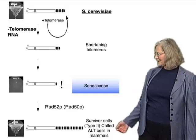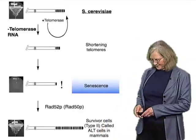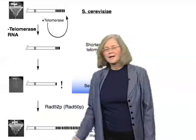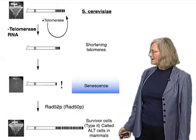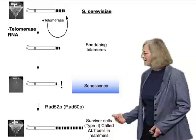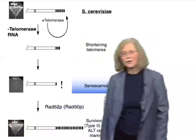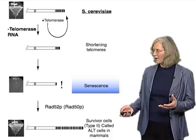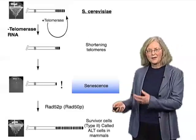A gene required for such survivors to appear is RAD52. For at least one of these pathways, the RAD50 gene is also required. RAD52 and RAD50 are in the homologous recombination pathway — they're needed for recombination, and therefore getting survivors required recombination. Without telomerase, most cells go through senescence, but rare cells can survive. That is another way chromosomes can survive. Interestingly, ALT is not normally seen in most normal cells. Although those survivor cells appear to grow well on the surface, if you look more closely some cells are not living well, but the majority can survive with these very long telomeres that they keep recombining.